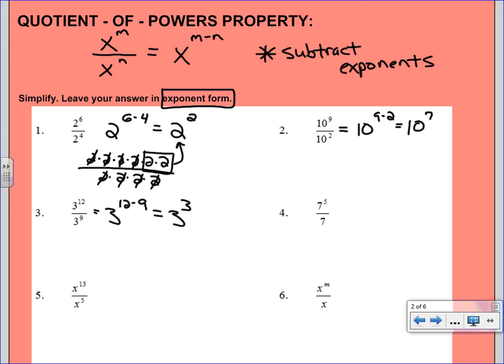Number four might be a little tricky. It's just that one that you have to envision there. So I would actually just add the one there on the bottom. So it becomes 7^(5-1), which would be 7^4. Number five, the only difference here is that we've got a variable as our base, but you still apply the property the same way. X would be our base, and we would do 13 minus 5 to give us x^8.